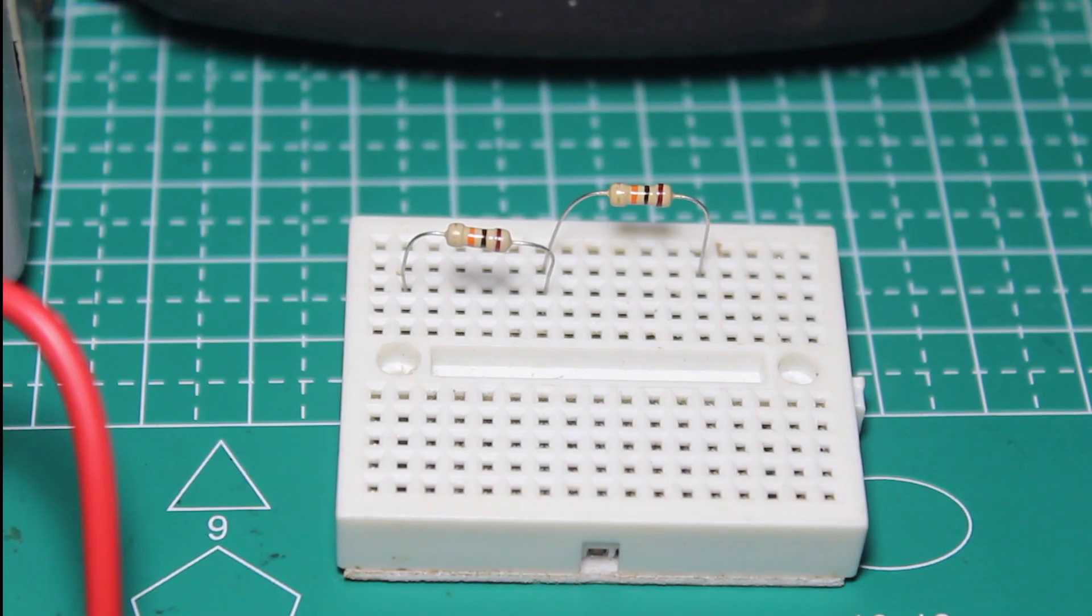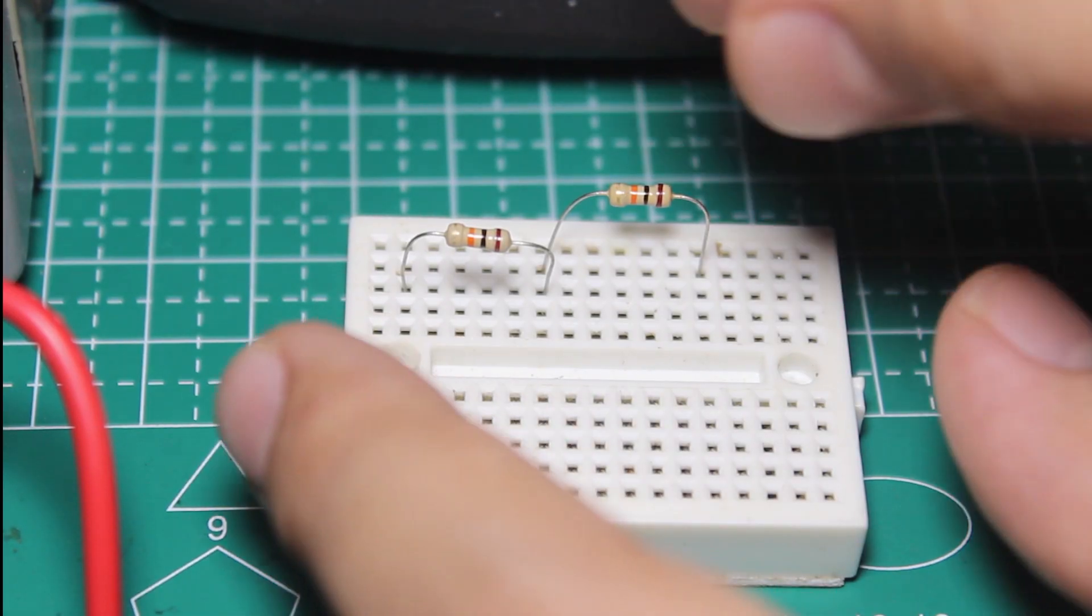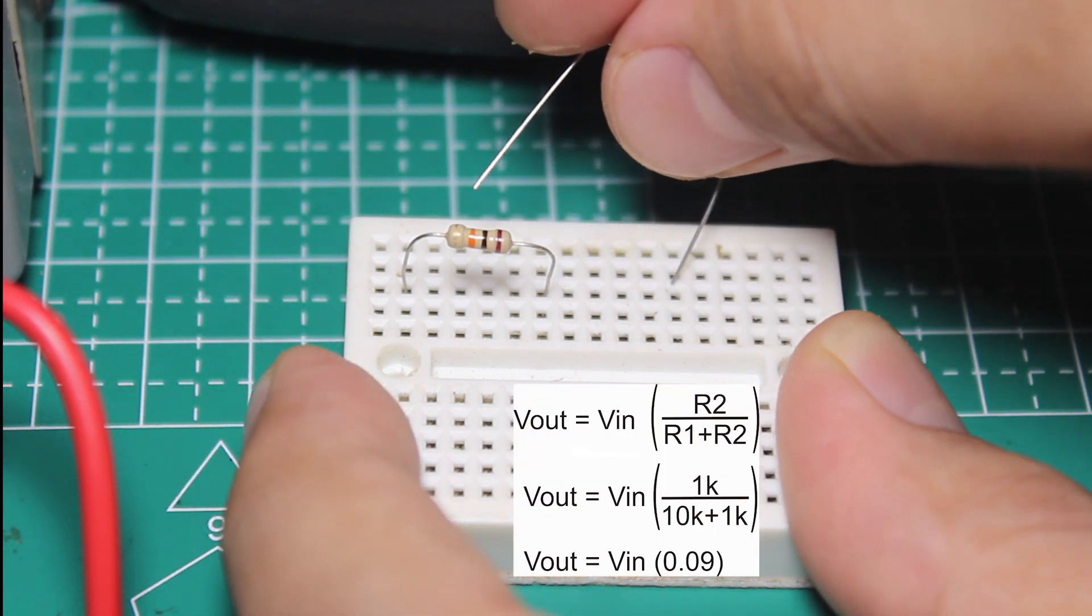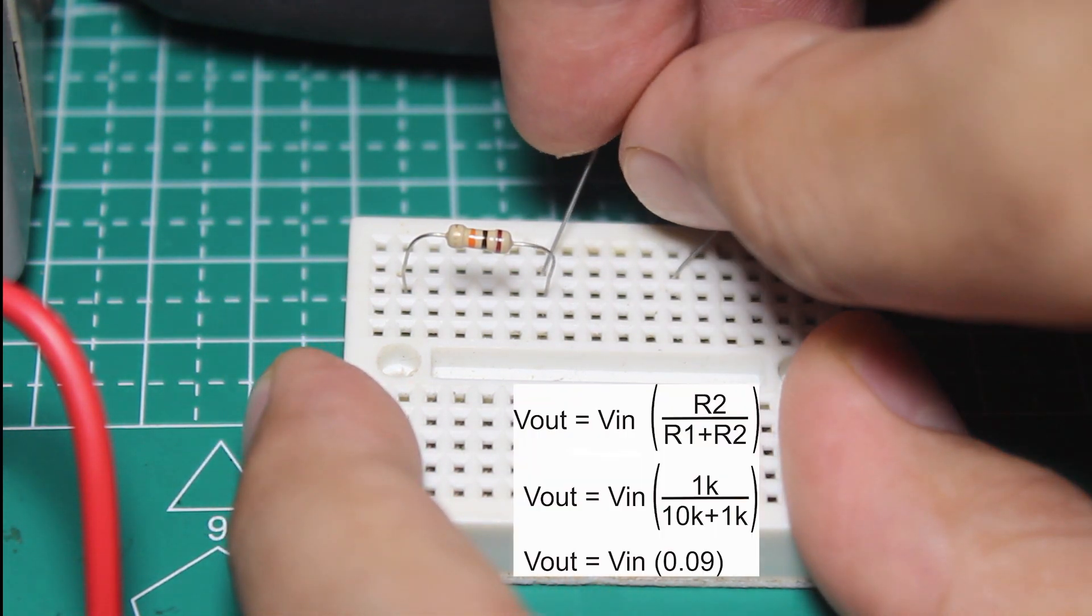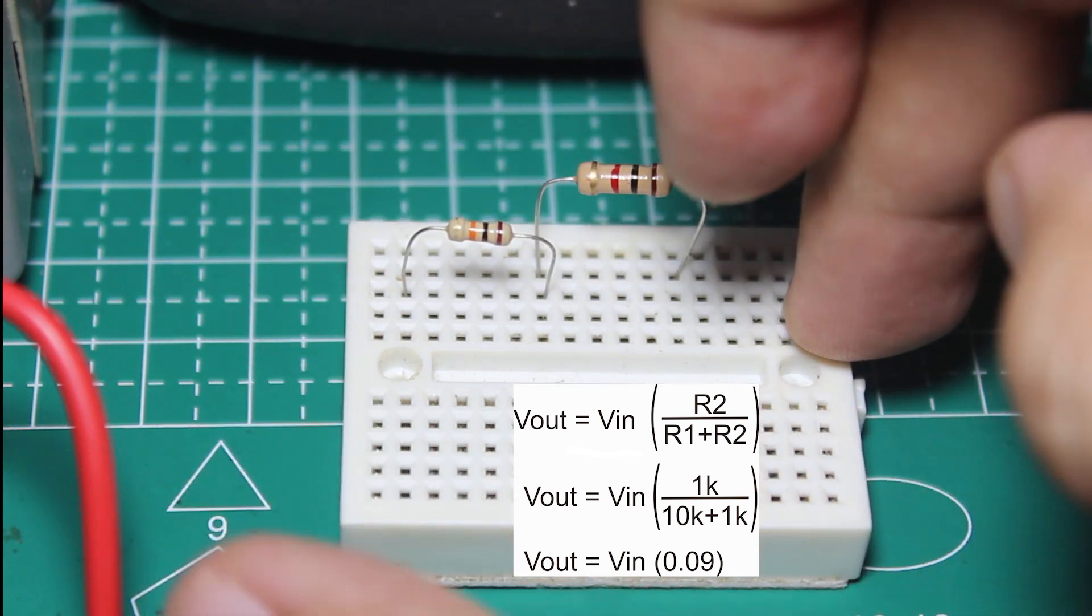Let's change the resistor value. The second experiment would be 10k ohm and 1k ohm resistor, so the output should be about 0.09 Vin.